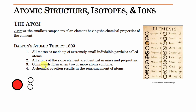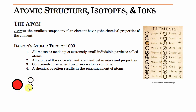He said that all atoms of the same element are identical in mass and properties. The red one here is oxygen and the white ones are hydrogen atoms. These two atoms are not the same because they're different elements. If I had two different hydrogen atoms, according to Dalton's atomic theory, these two atoms would be exactly the same, but yet they would be different from the oxygen atoms — different properties, different masses, and they react differently when combined.